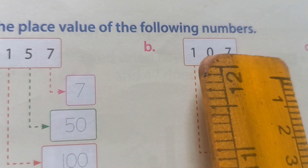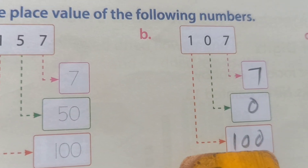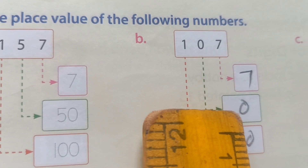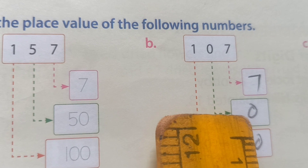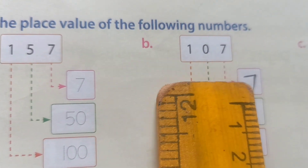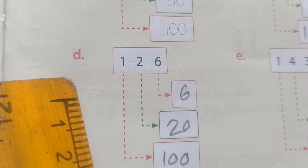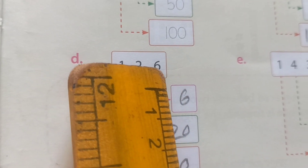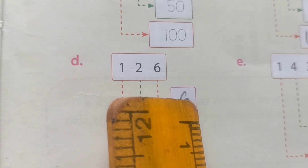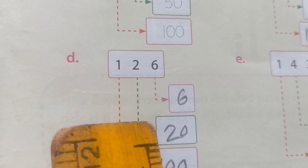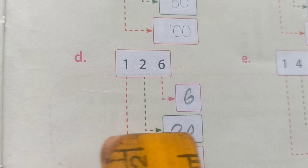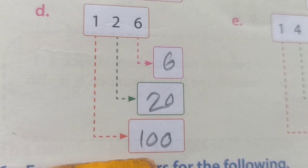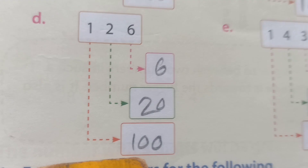B number: 107 means 1 is 100, 0 is this one 10s place, and 7 — 7 ones. D number: 126 — 6 means 6 ones, 2 means 2 tens means 20, and 1 means 100.